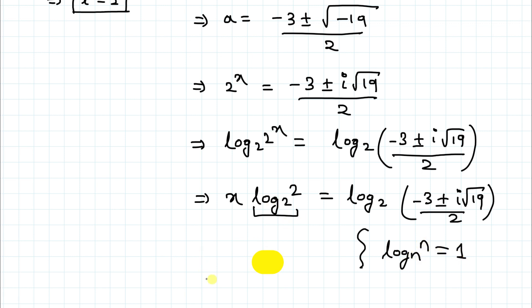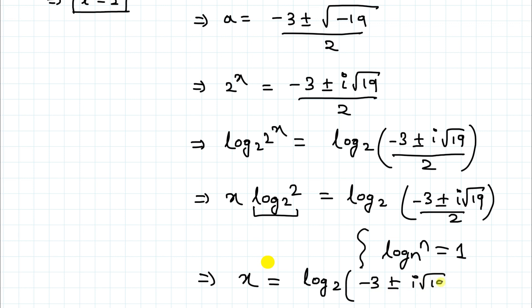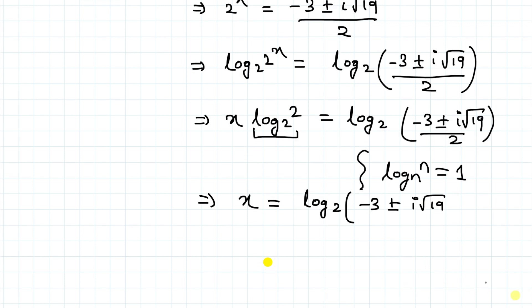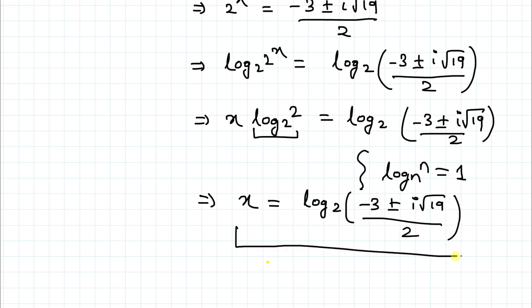Since log₂2 = 1, the other solutions are x = log₂((-3 ± i√19) / 2), which are complex solutions of x.